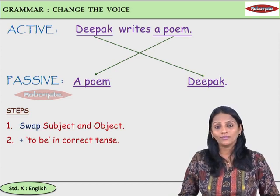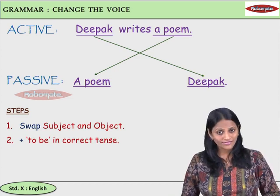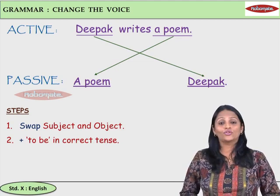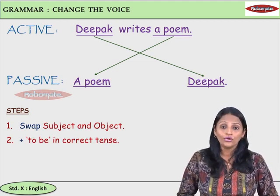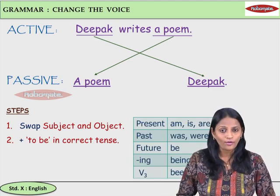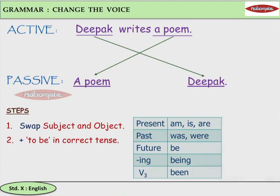When we place 'to be' in a sentence, we don't say 'I be, you be, he be.' We say 'I am, you are, he is.' So we are going to select the correct 'to be' form according to the tense and subject. In present tense the forms are: am, is, are. In past tense: was, were. In future tense: be. And in continuous sentences: being.